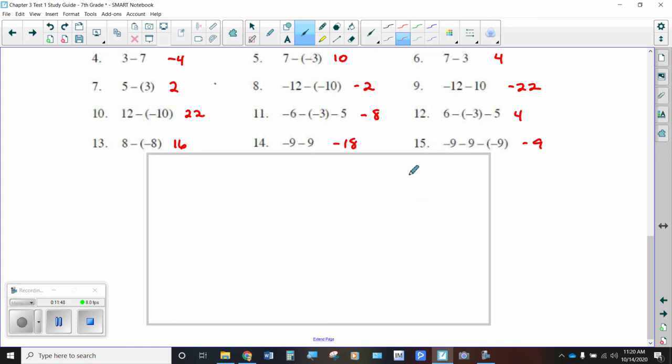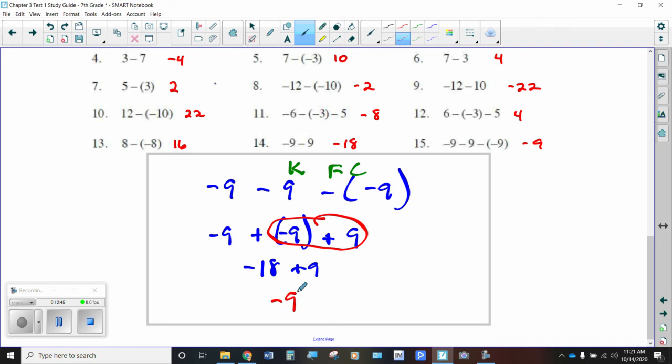I'll do one more. I'll do number 15, and that will end this. So let's take a negative 9 minus 9 minus a negative 9, and I'm going to do that KFC thing once again in stages. I'm going to keep this as a negative 9. I'm going to flip that to a plus sign. I'm going to change that to a negative 9. Then I'm going to keep this as a negative 9 and flip that to a plus sign and change this to its opposite, which is positive 9. So I've rewritten this entire expression, changing all the minus signs to plus signs and changing all the terms directly to the right of those minus signs to their opposites. So this became negative 9 plus negative 9 plus a positive 9. That's what we've got here. So we end up with negative 18 plus 9, or you might have recognized that this right here forms a zero pair. So eventually our answer is just going to be negative 9.